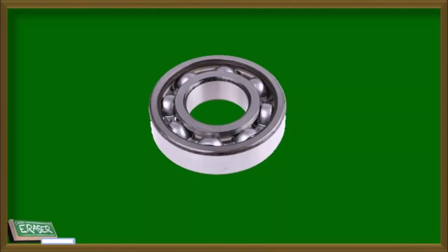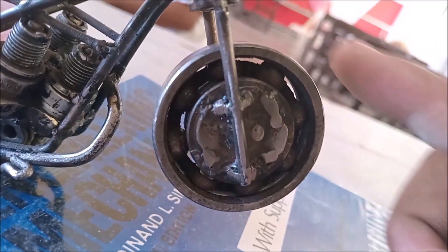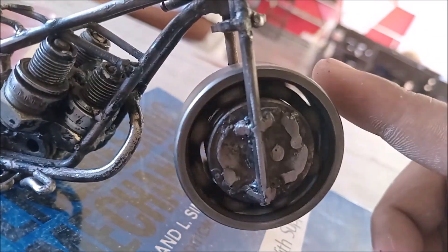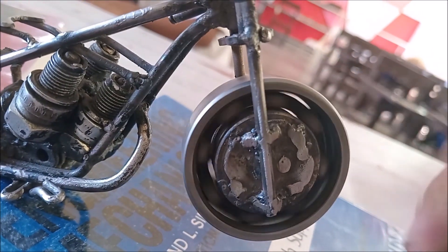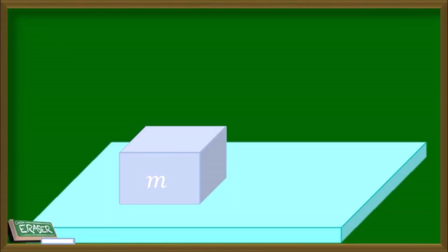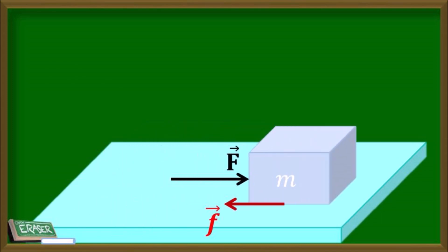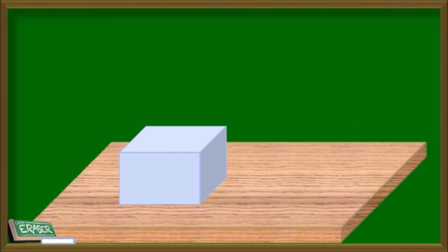Similarly, ball bearings are used in machines to minimize friction by allowing smooth rolling motion between two surfaces. And that's the basics of frictional force — it's a force that can both hinder and assist us in our daily activities.